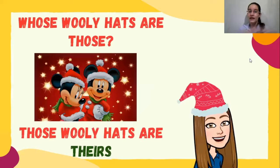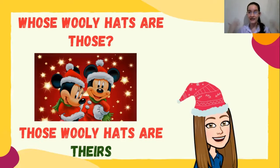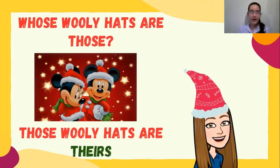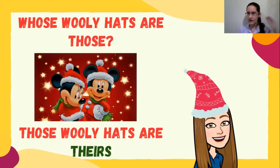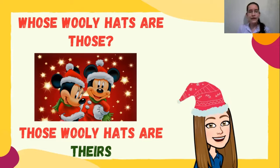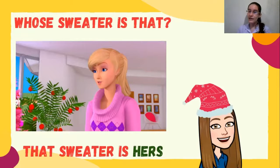So what about if I explain you my examples? ¿Qué les parece si ahora les explico mis ejemplos? For example, in the first one I chose Mickey and Minnie — en el primero yo escogí a Mickey y Minnie — y voy a estar haciendo pregunta acerca de sus wooly hats. So: 'Whose wooly hats are those?' De quién son estos wooly hats. 'Those wooly hats are theirs.' I'm using 'theirs' porque me estoy refiriendo a ellos.